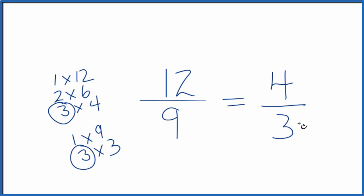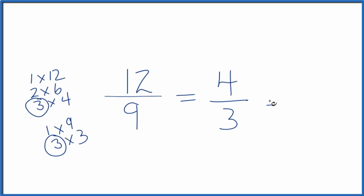4 thirds is an improper fraction because the numerator is larger than the denominator. We could change this to a mixed number as well. 3 goes into 4 one time with 1 left over. We bring the denominator across, and 4 thirds, the improper fraction, equals the mixed number 1 and 1 third.